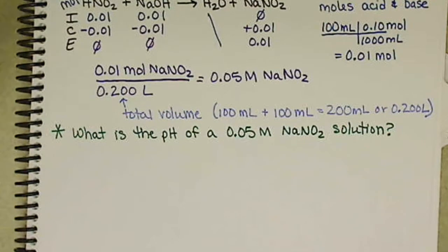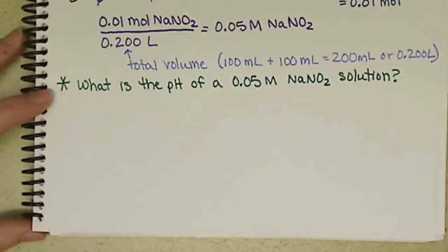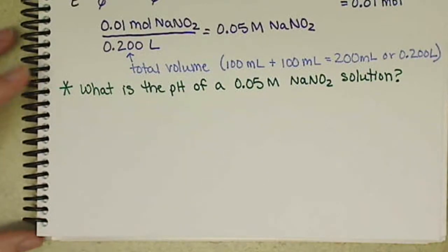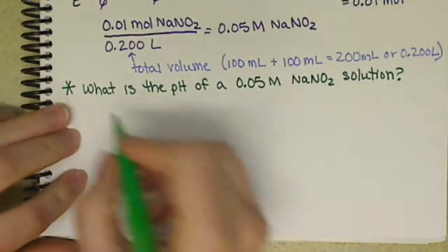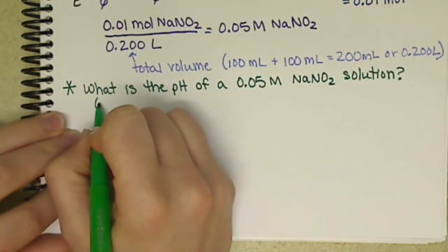So this last question we want to ask is, what is the pH of a 0.05 molar NaNO2 solution? So we want to set this up just as we would any other one. We're going to use our salt ion equation.